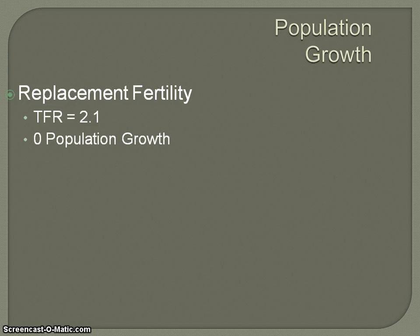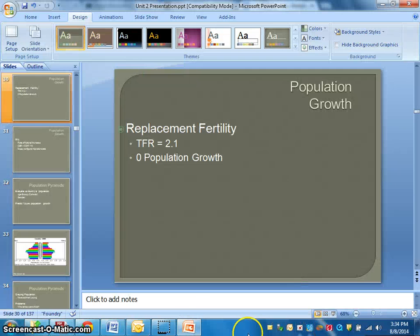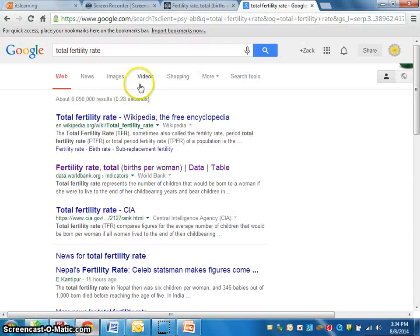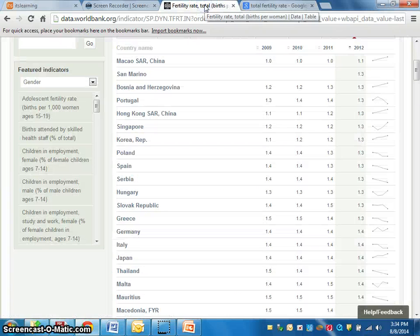You don't necessarily want a population that's growing too quickly, and you certainly don't want a population that's declining. A replacement fertility rate of 2.1 gives you enough people across the full spectrum of life — very young, middle-aged, or very old — in terms of balancing out the population, the economy, and social institutions.